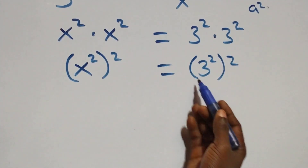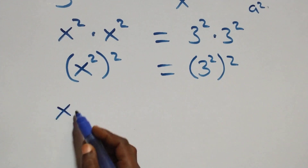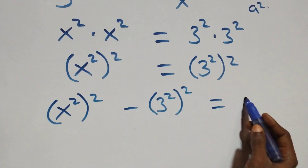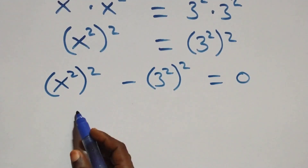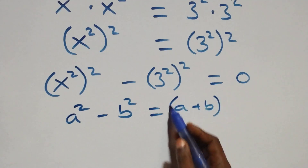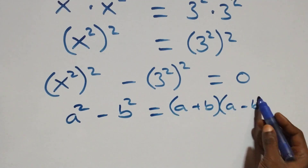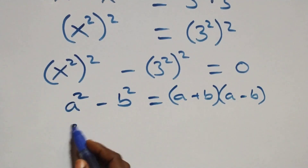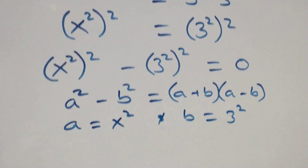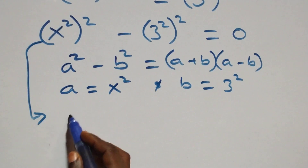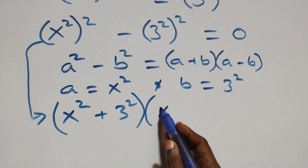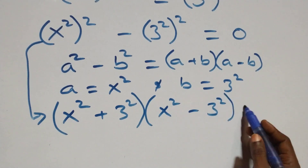Here we can take the right-hand side to the left-hand side and we have x squared or squared minus 3 squared or squared equals to 0. So we apply the identity a squared minus b squared, which can be written as (a + b)(a − b), where a is standing as x squared and b standing as 3 squared. Then what we have becomes (x squared + 3 squared)(x squared − 3 squared) equals to 0.